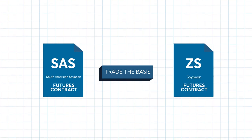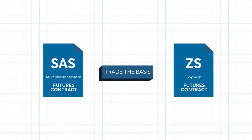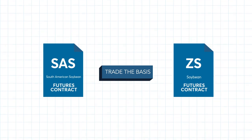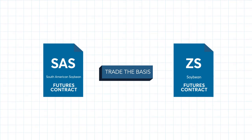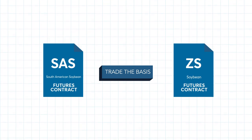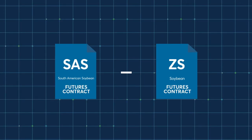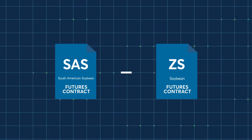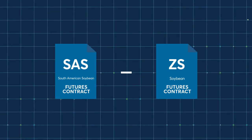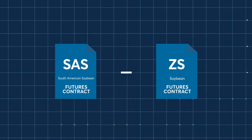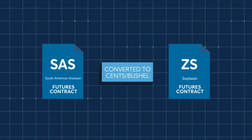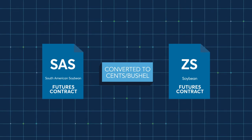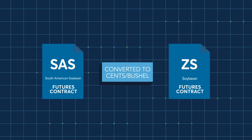This is done by spreading the U.S.-based soybean contract and the price represented by the new South American contract. The spread, or BASIS, between the two is defined as the South American contract less the U.S. contract, converted to cents per bushel. This relationship between the price of the two contracts should reflect where the actual basis stands at any given point in time.